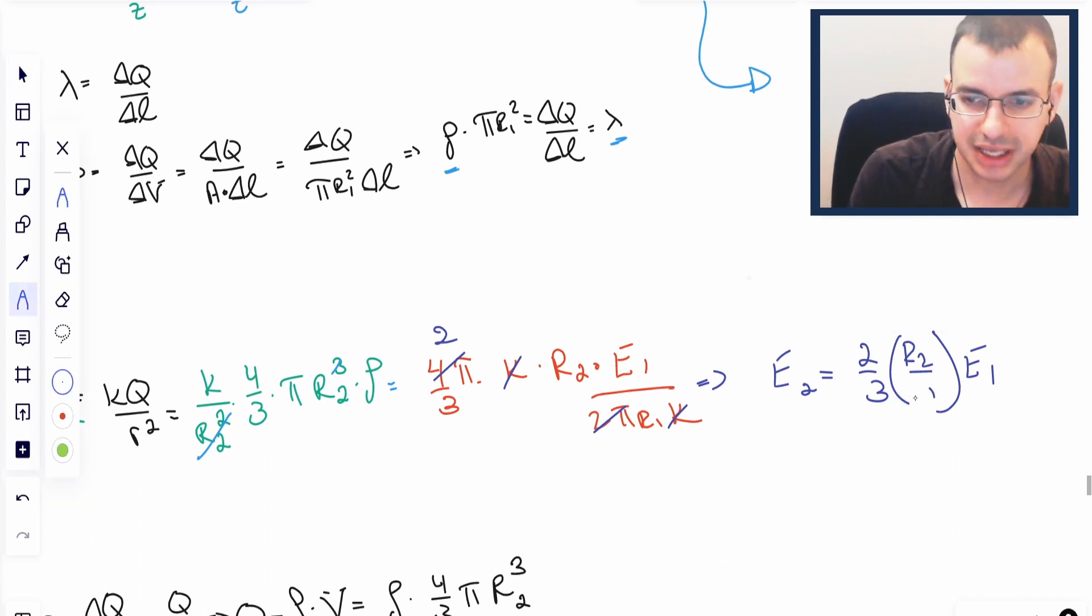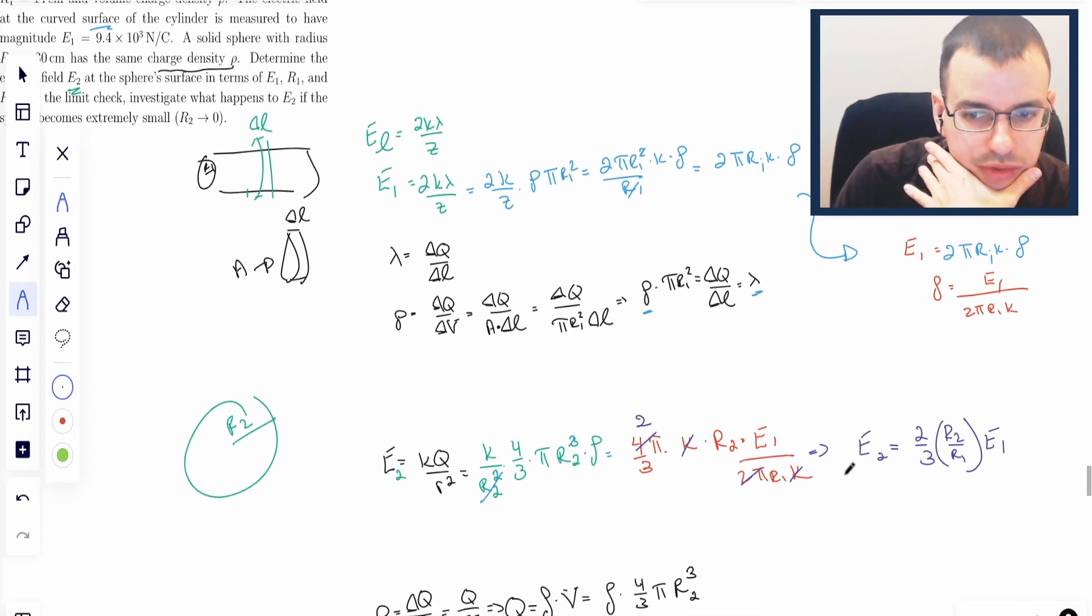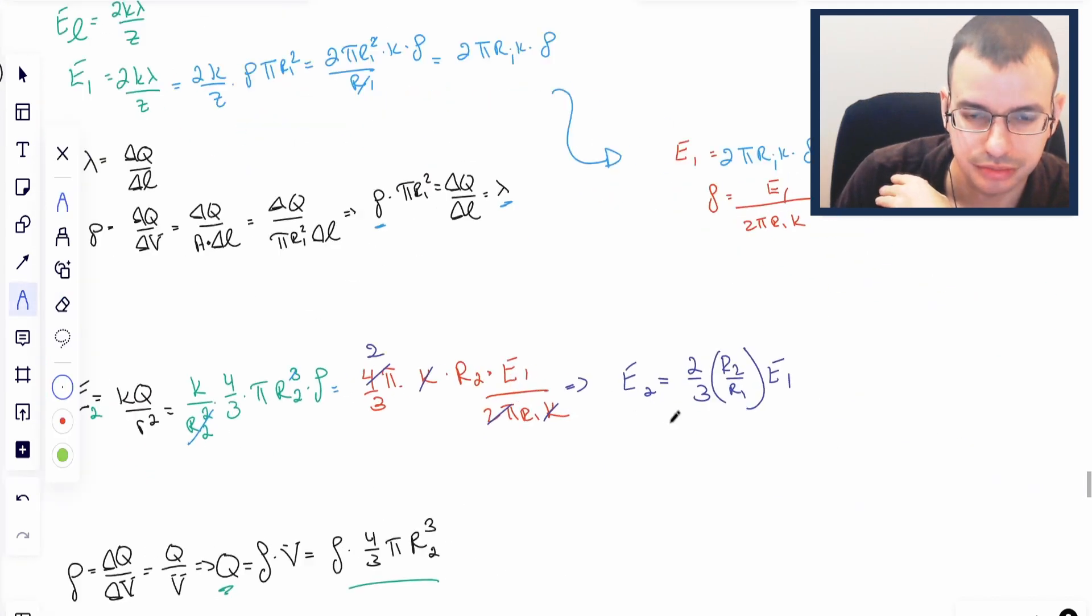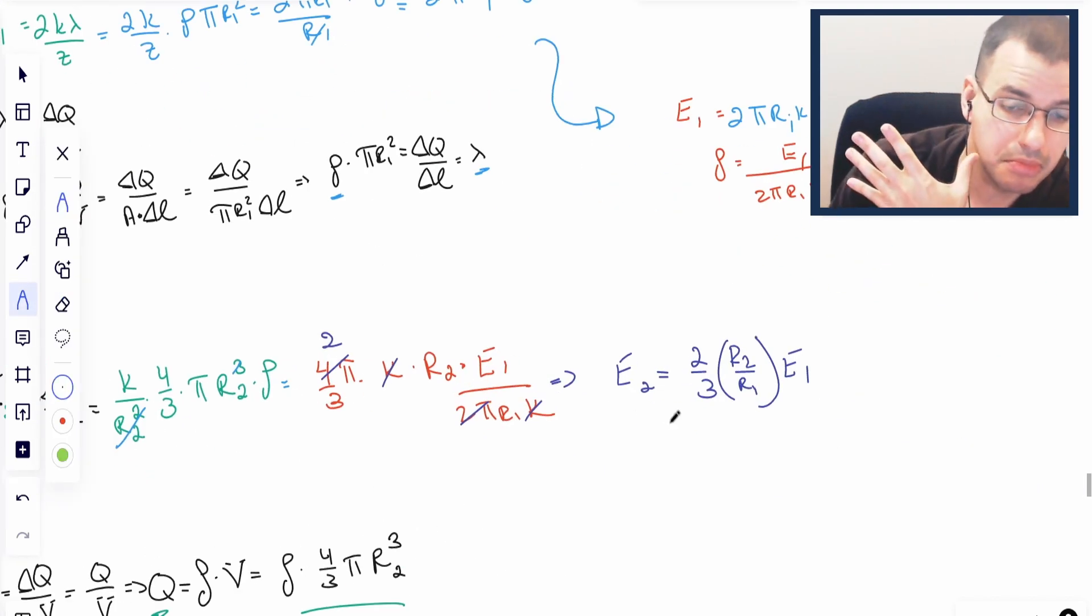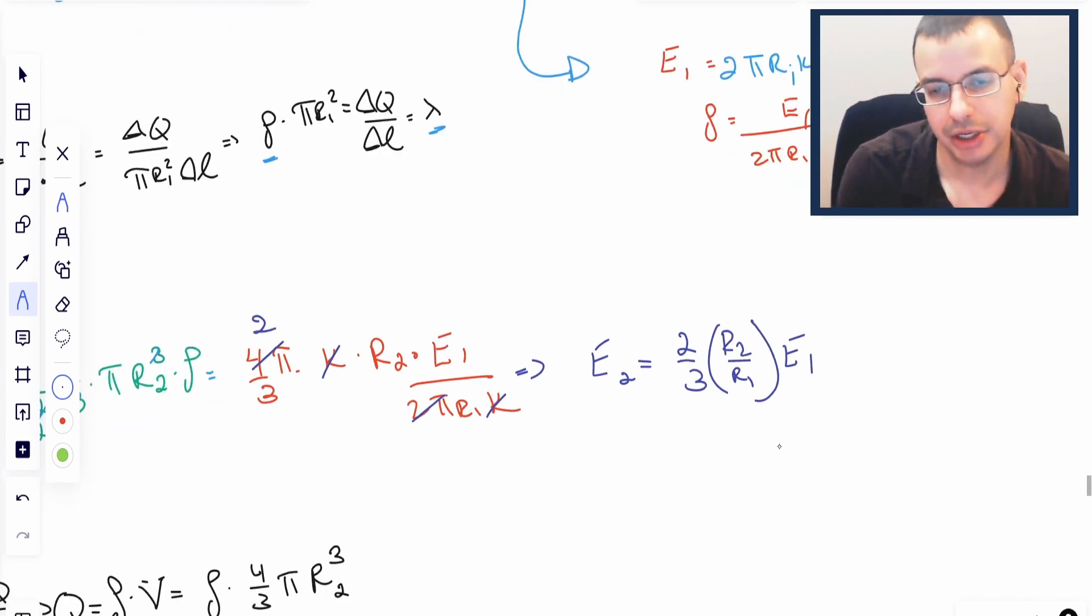Which seems counterintuitive, but it might be true. We want to determine electric field E2 in terms of E1, R1, and R2. One thing to notice is the units match. R2 and R1 cancel out each other, so it's just a ratio. And dimension-wise, that seems plausible.